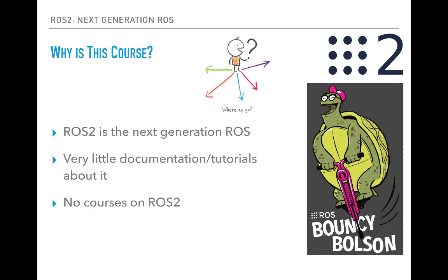Why am I pitching this course? ROS2 is the next generation robot operating system and is actively being developed to fully replace ROS1 in the near future. With the release of ROS2 Bouncy in July 2018, ROS2 has gained a lot of maturity and most of its design goals were achieved and implemented. However, when I started to learn ROS2, I realized there is very little documentation and tutorials about it. There are no courses, and only a few short tutorials on the official GitHub repository were available, which do not give the overall picture.